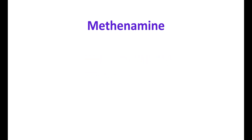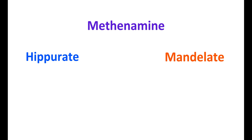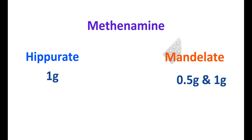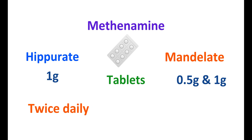Regarding the doses of methenamine: it is available in two salts — hippurate and mandelate. Hippurate is available at a one gram strength, whereas mandelate is available at 0.5 gram and one gram strengths. Both are available as tablets but are not equivalent. Methenamine hippurate is given twice daily, whereas methenamine mandelate is given four times per day.